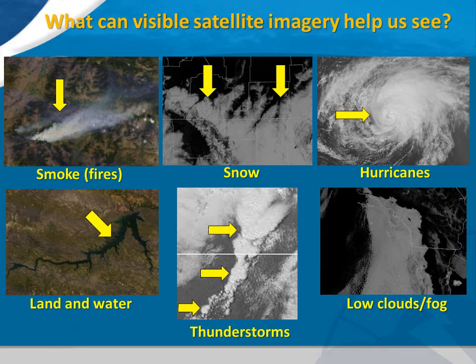Areas and lines of thunderstorms can appear as big, puffy cloud masses. Low clouds and fog appear as areas of very flat clouds close to the Earth and can have distinct boundaries, such as the low clouds and fog we see along the southern California coast in the bottom right image.